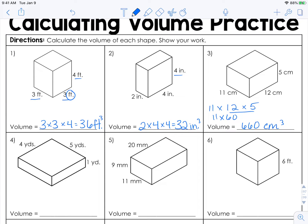We'll do two more examples. This volume: 4 times 5 times 1. 4 times 5 is 20, and 20 times 1 is 20, so this volume is 20 cubic yards. This next figure: 20 times 9 times 11. The order in which you multiply doesn't matter, so we'll do 20 times 9 first, which is 180, times 11, and you will get 1,980 cubic millimeters.